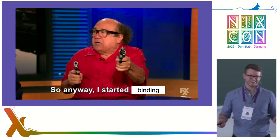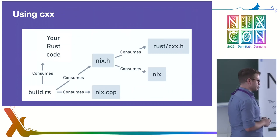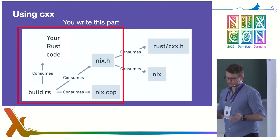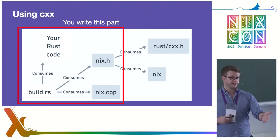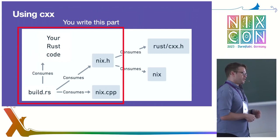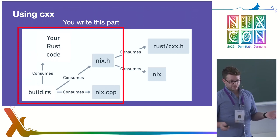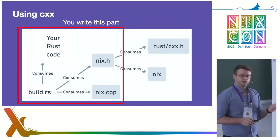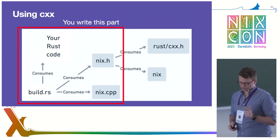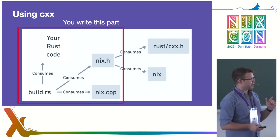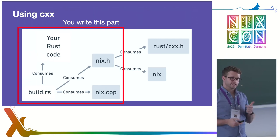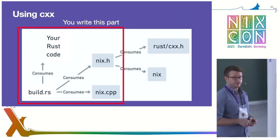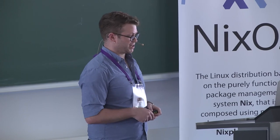So I started binding. Here's what it's actually like to use CXX. You write a header file that includes all the headers from whatever project you're binding to — Nix in this case. Then you have a file called nix.cpp that contains any implementations or adapters you want. And you have to write a build script that does two things: it compiles your Rust code, and it also does all the package config and C compilation, adding flags and so on. When I started this, I'd never done any of that before — that was a little painful.